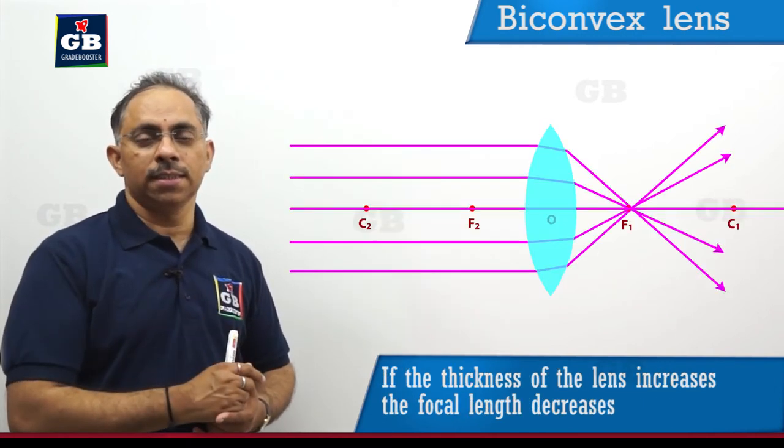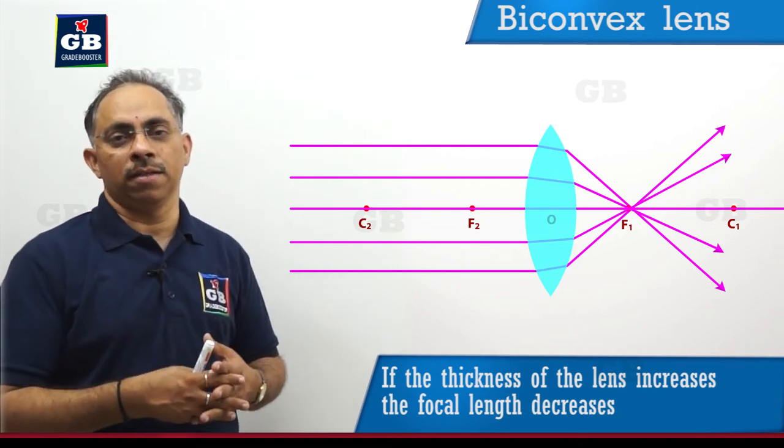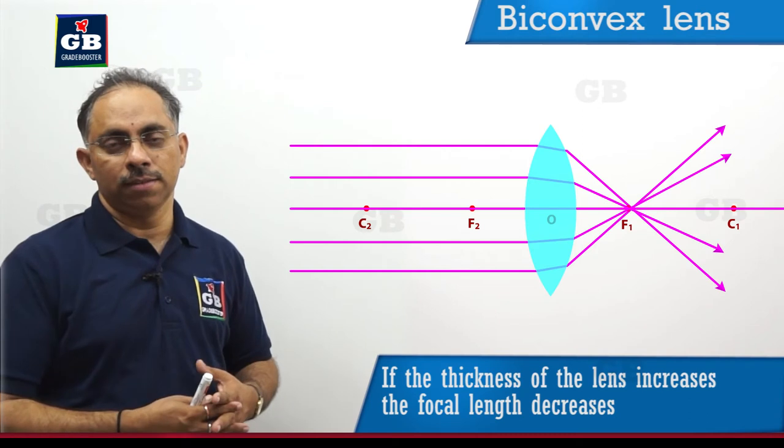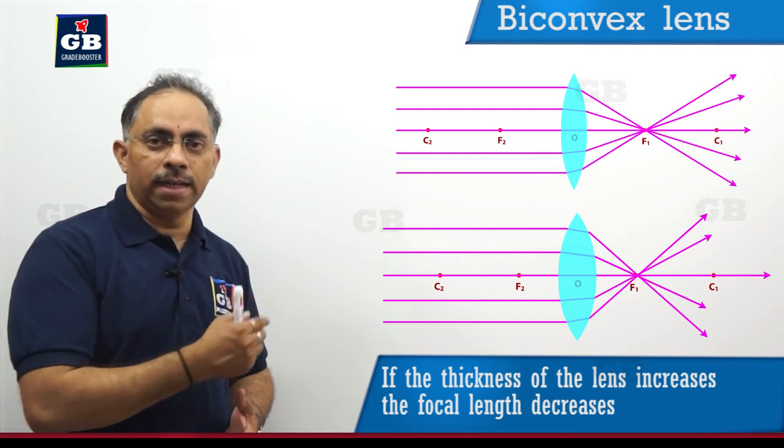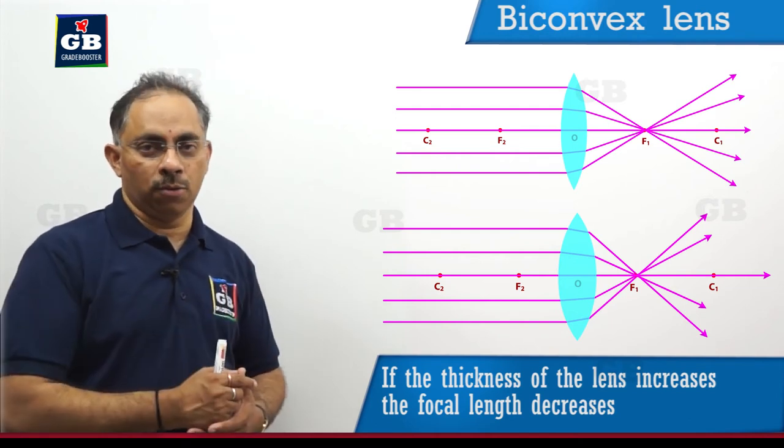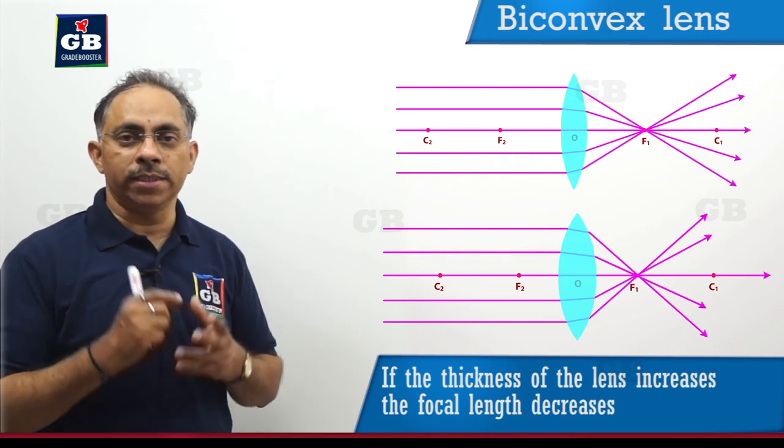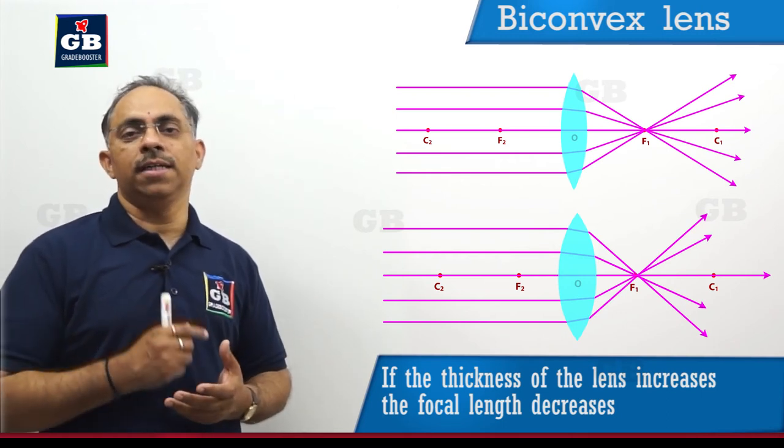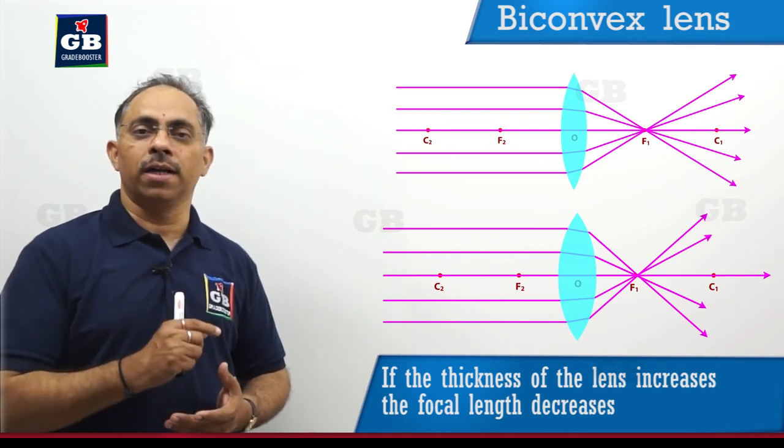So, in this process, again they will converge more and then they will meet at a point, the principal focus. Now, the difference is, this principal focus is at a nearer point from the optic center O when compared to the thin lens. This means that the focal length of the thick lens is shorter than the focal length of the thin lens.